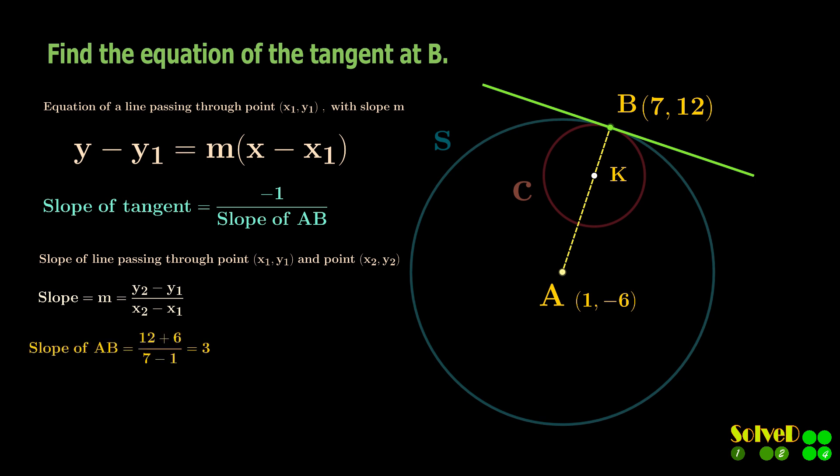This gives the slope of the tangent. Finally, here is the equation of the tangent line, where M is the slope of the tangent line.